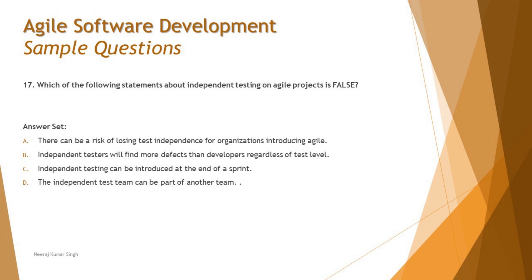Option A says: there can be a risk of losing test independence for an organization introducing agile. That's not false — it's true. When you work closely with developers and other stakeholders, it's easy to start behaving like them or losing your perspective as an end user, so working closely with developers could tend to remove that independent testing perspective altogether.